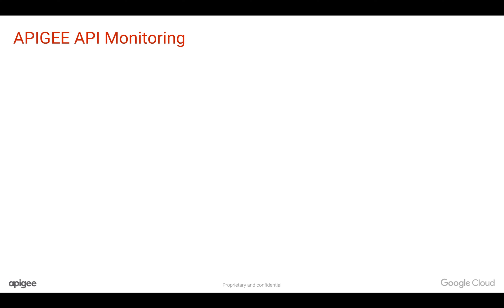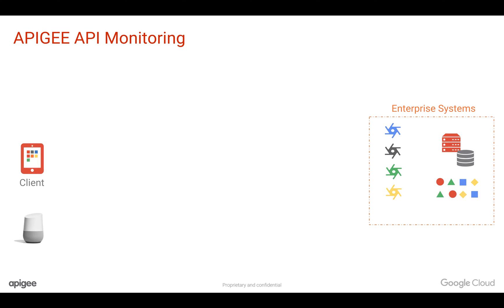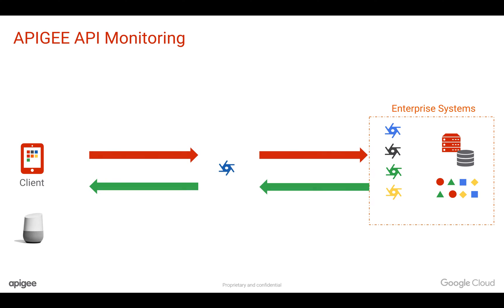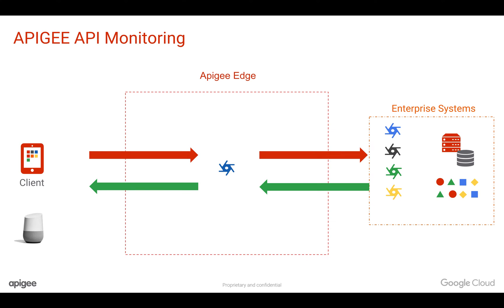To solve that problem, Apigee Edge came up with an intelligent, powerful, integrated API monitoring solution on cloud. So how does it work? You have the backend systems and you have various clients. As you know, Apigee Edge sits in between the client and the backend system, where you build, manage, secure, scale, as well as analyze your APIs.